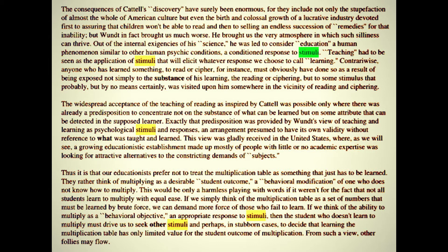"Thus, it is that our educationists prefer not to treat the multiplication table as something that just has to be learned. They rather think of multiplying as a desirable student outcome, a behavioral modification of one who does not know how to multiply. This would be only a harmless playing with words if it weren't for the fact that not all students learn to multiply with equal ease. If we simply think of the multiplication table as a set of numbers that must be learned by brute force, we can demand more force of those who fail to learn. If we think of the ability to multiply as a behavioral objective, an appropriate response to stimuli, then the student who doesn't learn to multiply must drive us to seek other stimuli and perhaps, in stubborn cases, to decide that learning the multiplication table has only limited value for the student outcome of multiplication. From such view, other follies may follow."